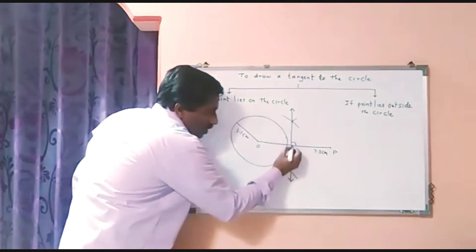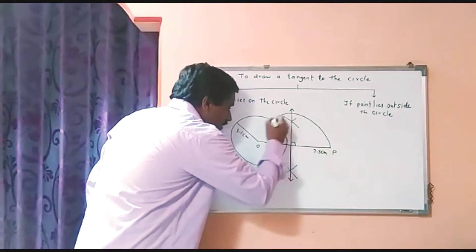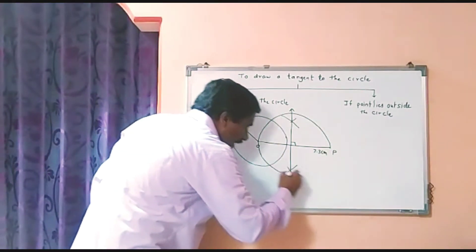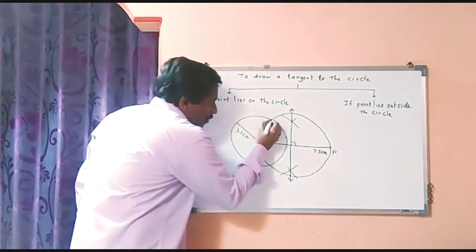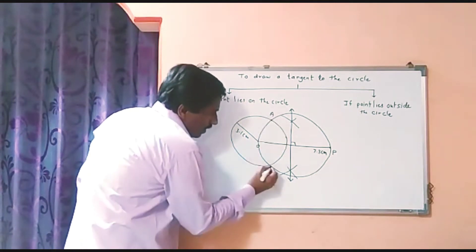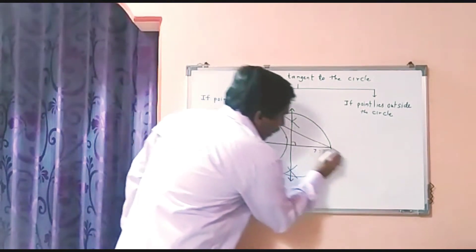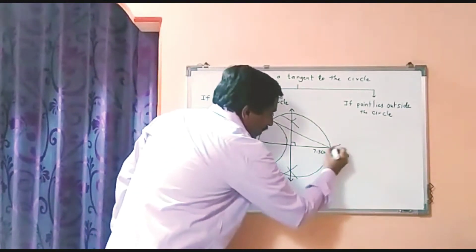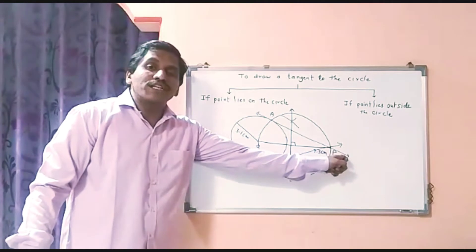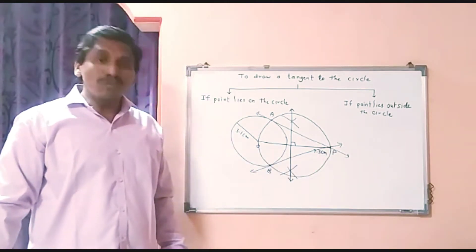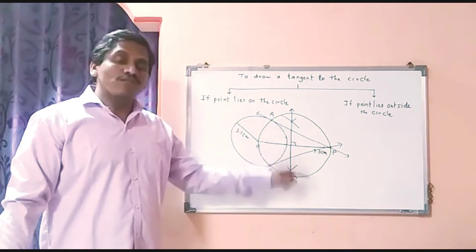Now, taking this midpoint as the center, I will draw a circle passing through point O and point B. Whatever point of intersection, label it as A and this one as B. If I join line PA and line PB, these are tangents from this exterior point. It means we can draw two tangents to the circle through the point which lies outside the circle.